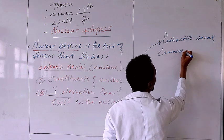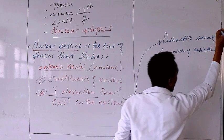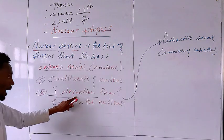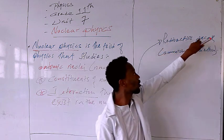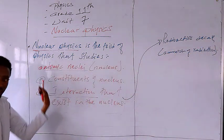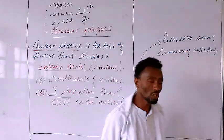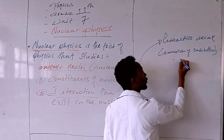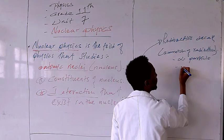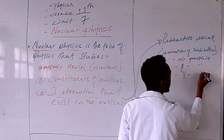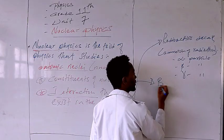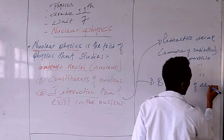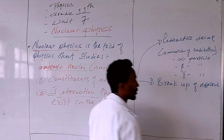One result of nuclear interactions is the emission of radiation. Where there is instability in the nucleus, a consequence of that is radioactivity — radiation emitted as a form of alpha particle, as a form of beta particle, and as a form of gamma. Also, nuclear interactions can lead to the breakup of the nucleus.